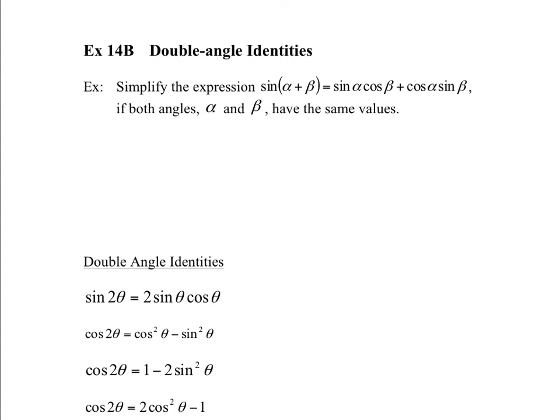So first let's start with this expression here. Sine of alpha plus beta equals sine alpha cos beta plus cos alpha sine beta. This is a formula you learned in 14a — it's just an identity. If you add the two angles together, this is how you would calculate it using exact values. Well, what happens if both alpha and beta are the same angle? So let's say alpha is equal to beta, which we'll make one variable — let's call it theta.